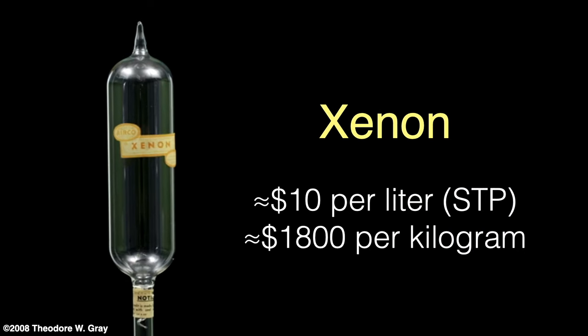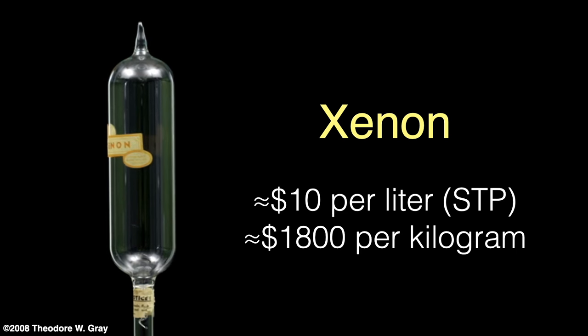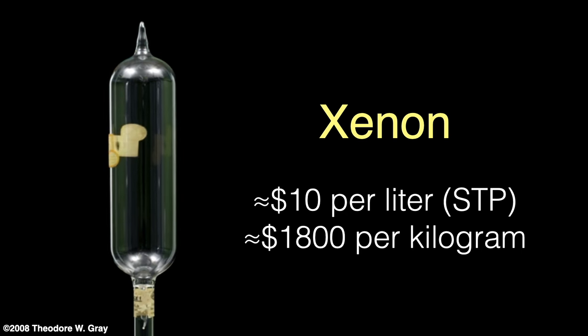Xenon costs about 10 times as much as krypton, and about 2,000 times as much as argon. It's a pricey element at about $10 per liter of gas at atmospheric pressure, or about $1,800 per kilogram.